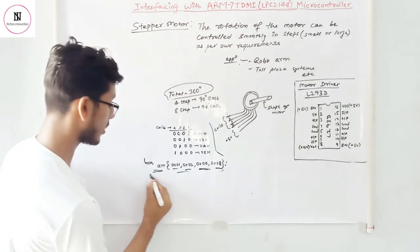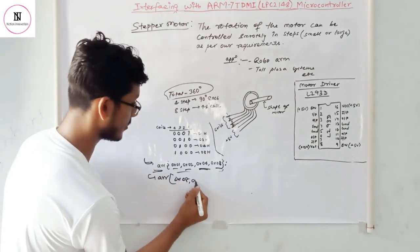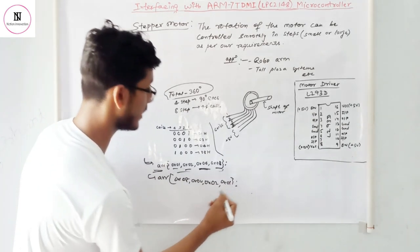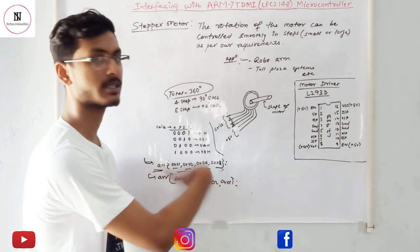If we want to anti-clockwise, then this will be same. Just it will be 08, 04, 0x02 and 0x01. This will give anti-clockwise rotation. These are the basics of stepper motor interfacing.